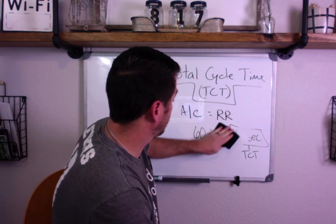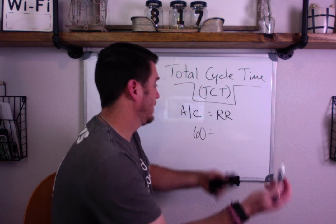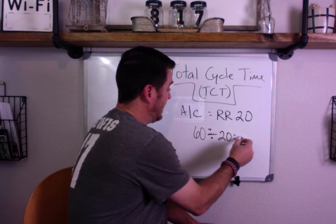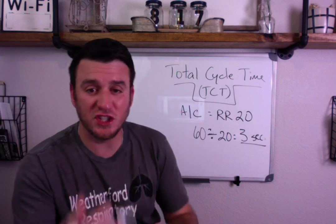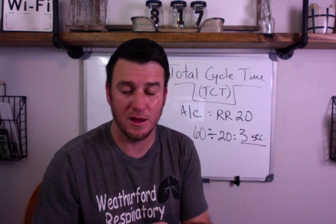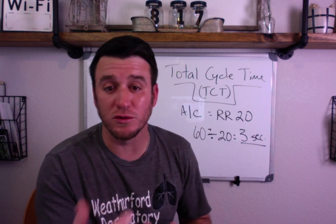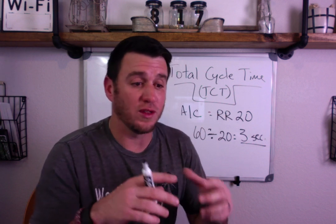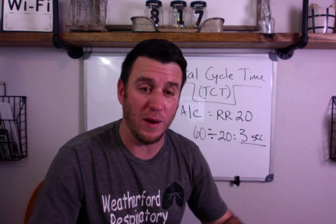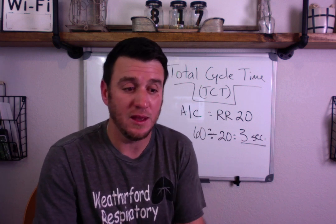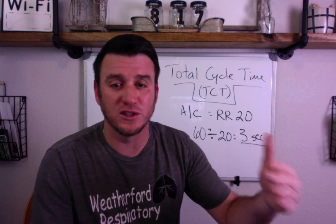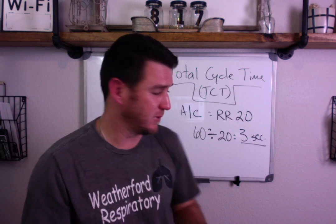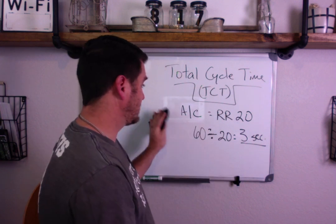If we change our rate to 20, then we do 60 divided by 20 and we get 3 seconds. This shows you that respiratory rate plays a role in total cycle time. Total cycle time plays a role in your patient's ability — the time they have to get the breath in and all the way out. If your total cycle time is not sufficient, your patient may air trap before the start of the next breath. That's why it's important and why you need to understand it.